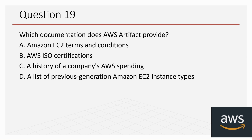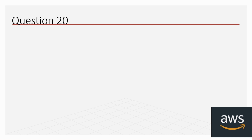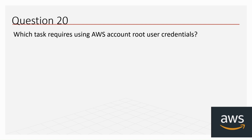Question 19: Which documentation does AWS Artifact provide? The options are: A) Amazon EC2 terms and conditions, B) AWS ISO certifications, C) A history of a company's AWS spending, and D) A list of previous generation Amazon EC2 instance types. The correct answer is B, AWS ISO certifications.